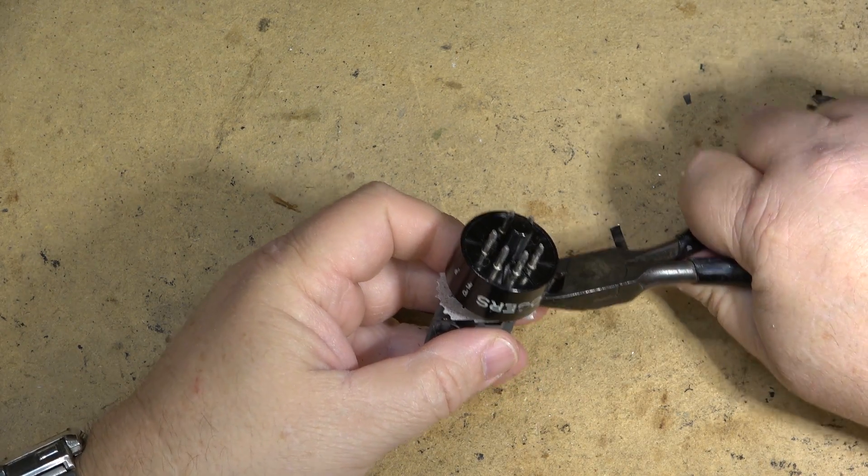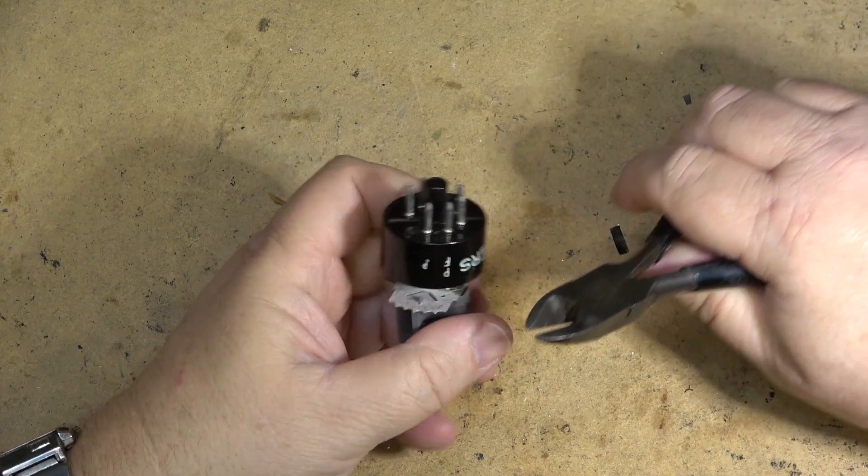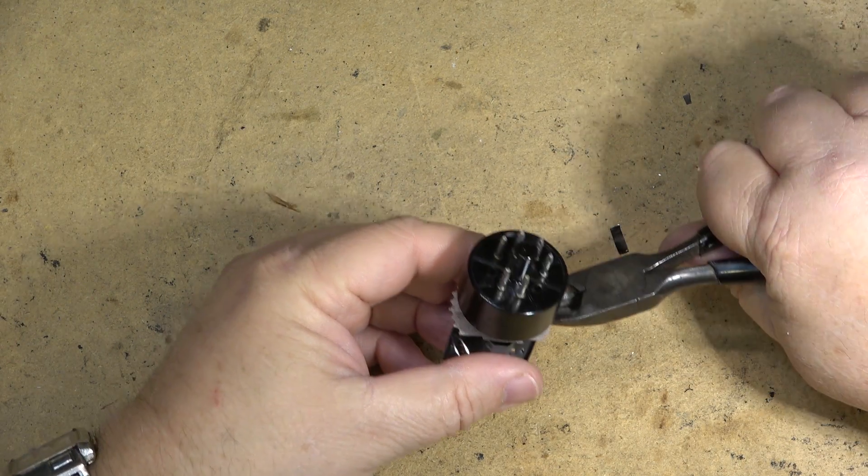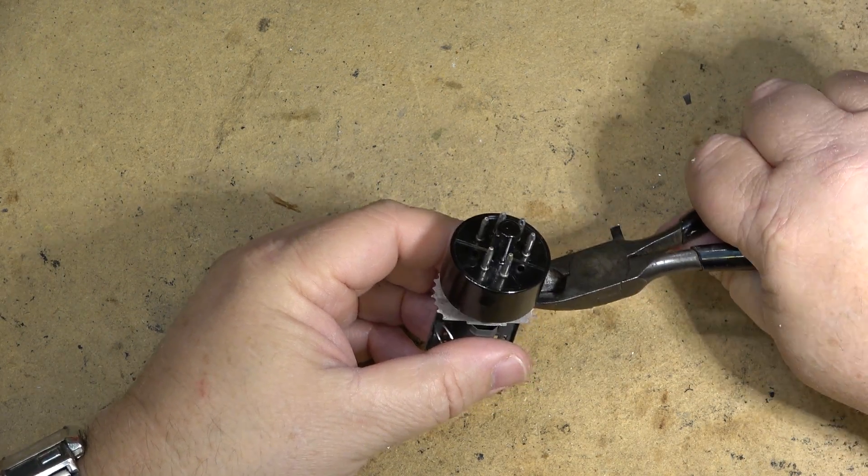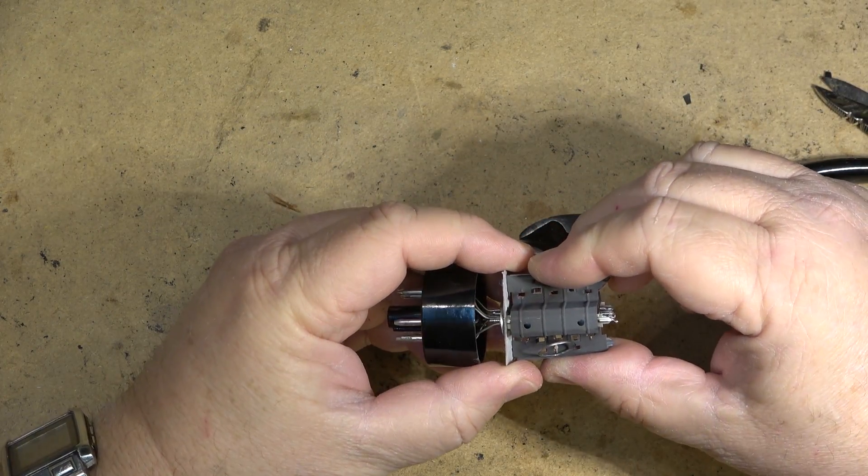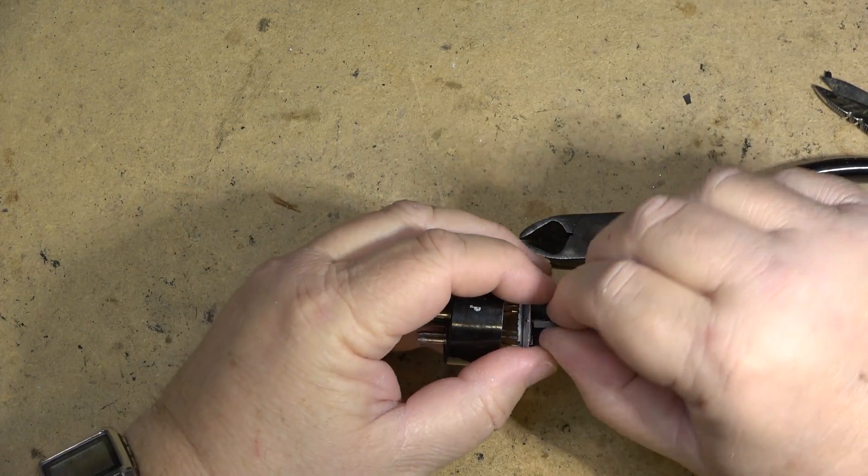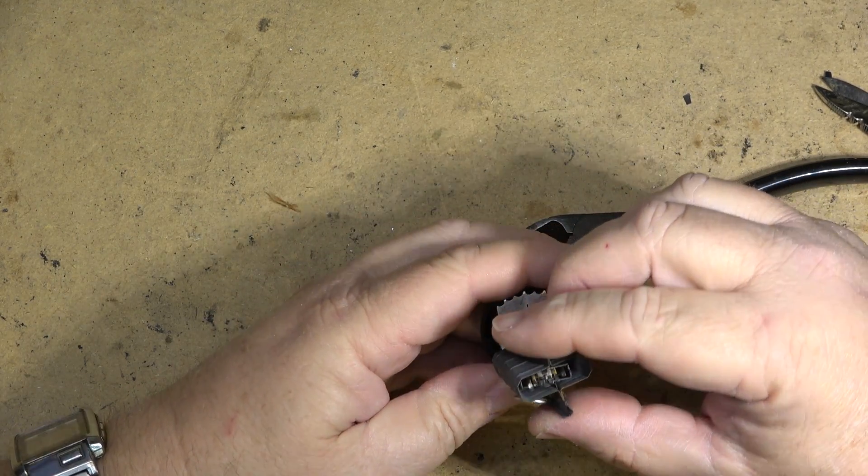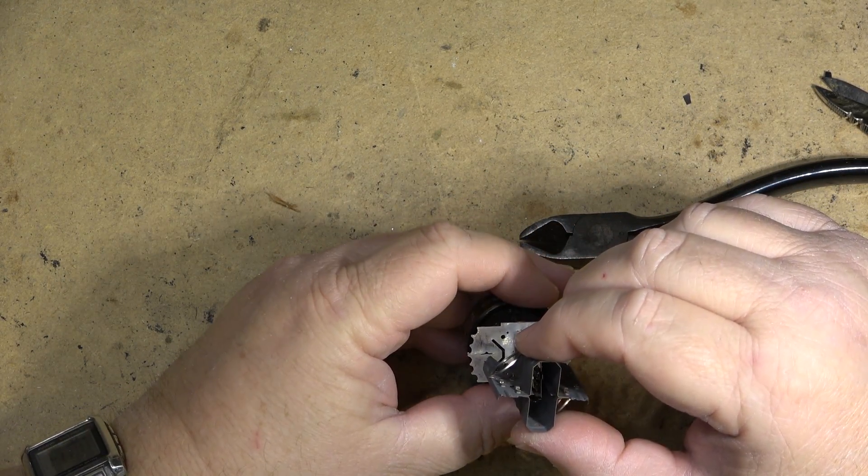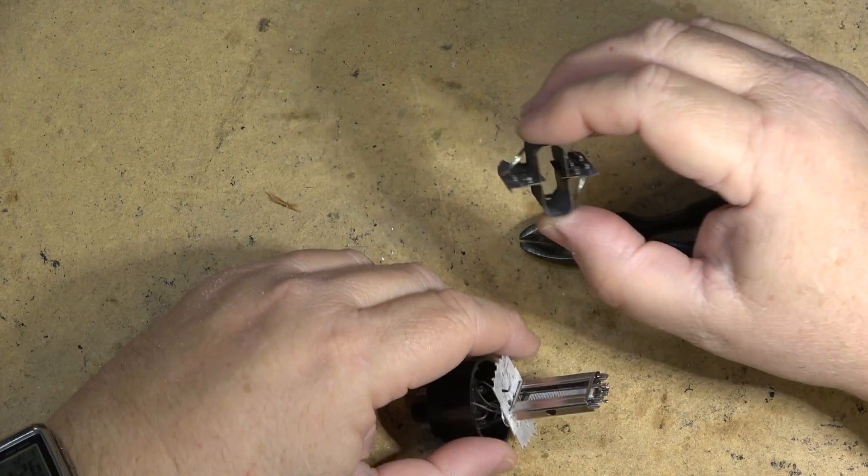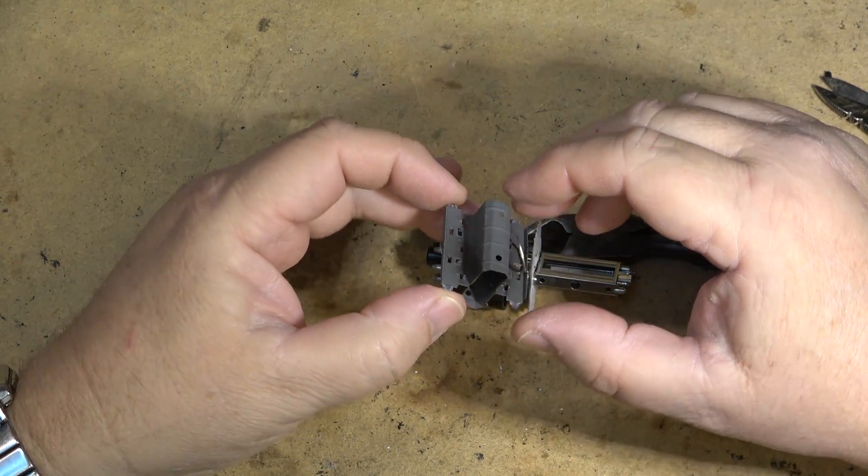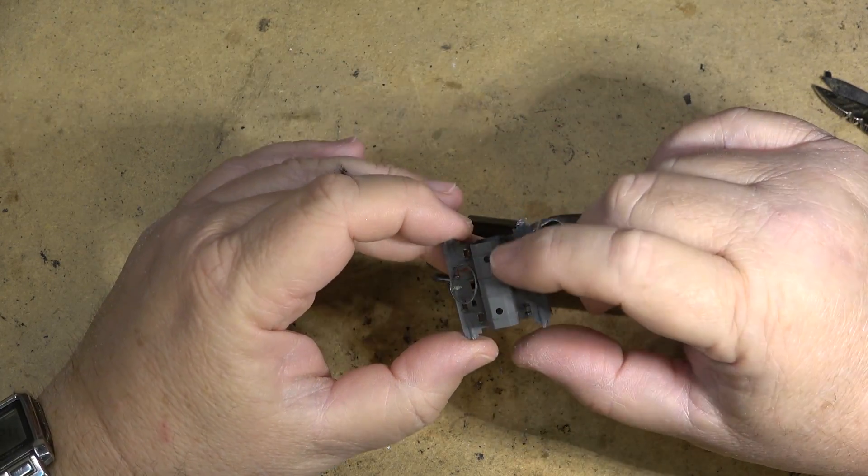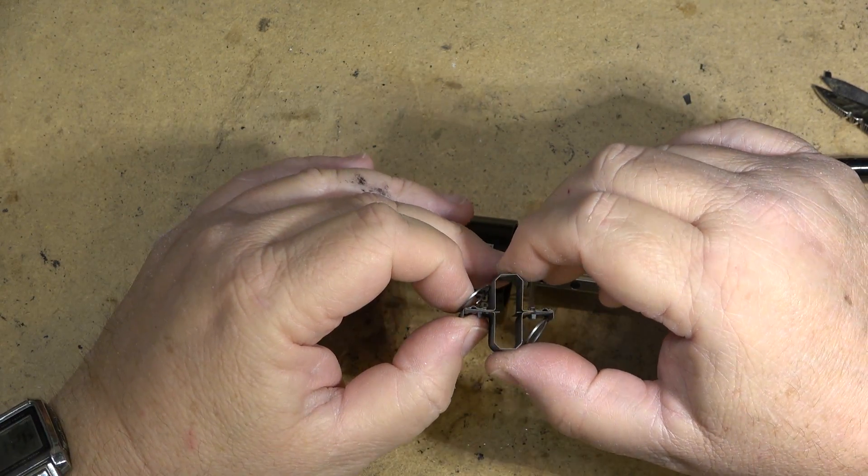If I straighten out the crimp here, I should be able to pull the rest of the plate out. There we go. So this is the plate. The electrons are attracted to the positive plate. So this is the positive, the anode basically.